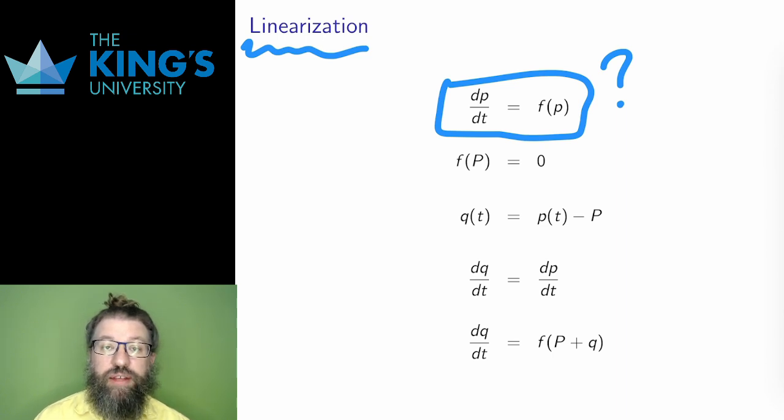We'll see how this method plays out later in the course again. For now, let me just show you how to linearize a first-order autonomous DE. Here is such a DE, along with a steady state of capital P. As a steady state, the right hand is zero. F of capital P is zero.